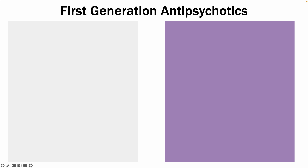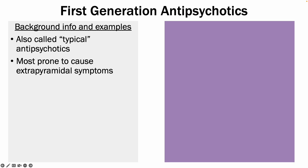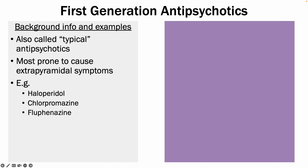Starting with first-generation antipsychotics — some background information: they are also called typical antipsychotics, and they are more prone to causing extrapyramidal symptoms. Examples include haloperidol, chlorpromazine, and fluphenazine.